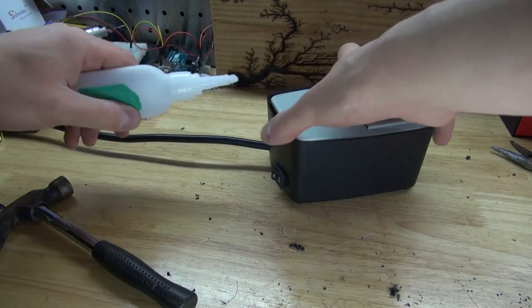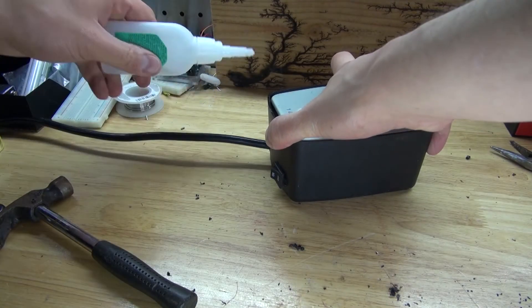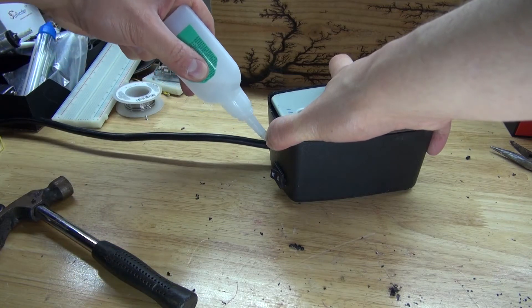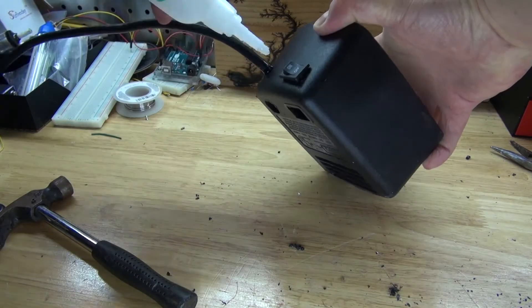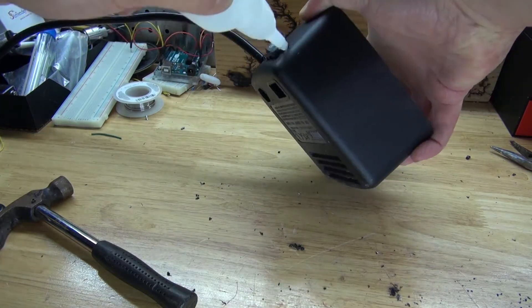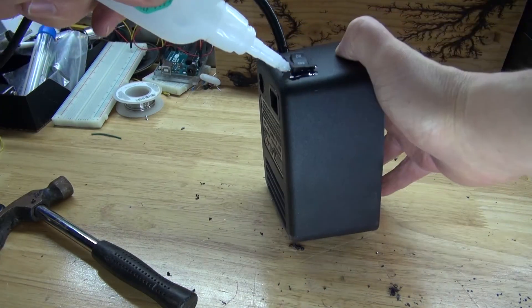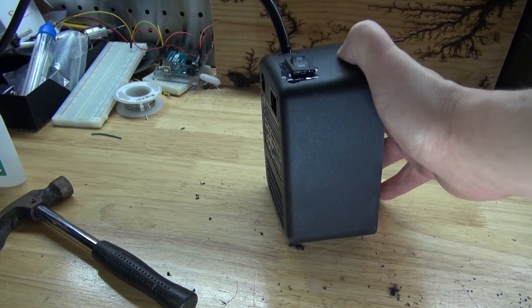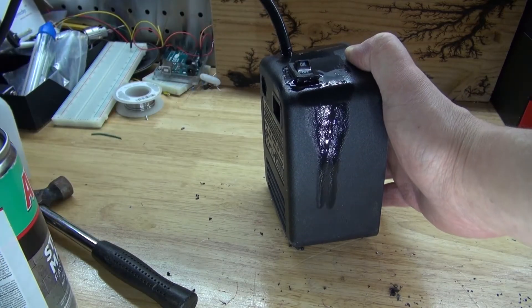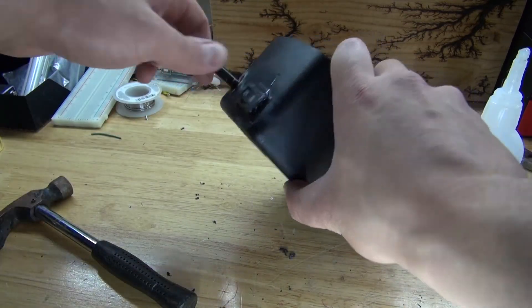Next, I'm going to take some super glue and glue everything into place. Glue down the electrical cord and glue down the switch. Doing this will make everything stay in place more secure. Spray some activator, and there we go. Everything is now secure.